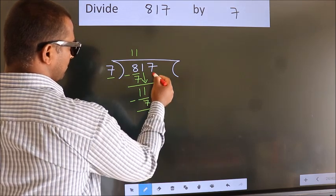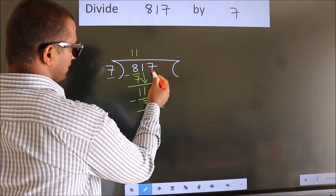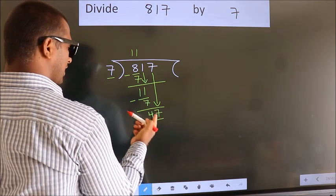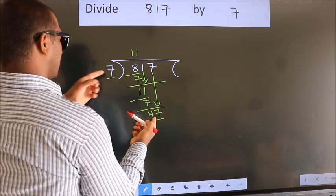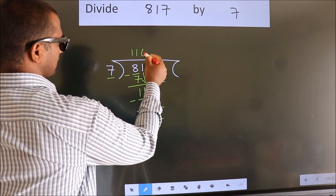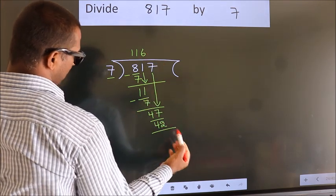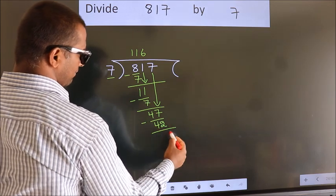After this, bring down the beside number, so 7 down, so 47. A number close to 47 in 7 table is 7×6=42. Now we subtract, we get 5.